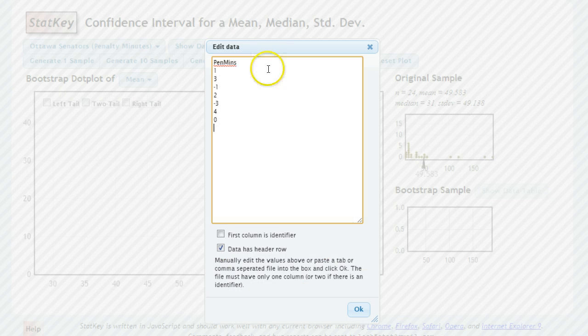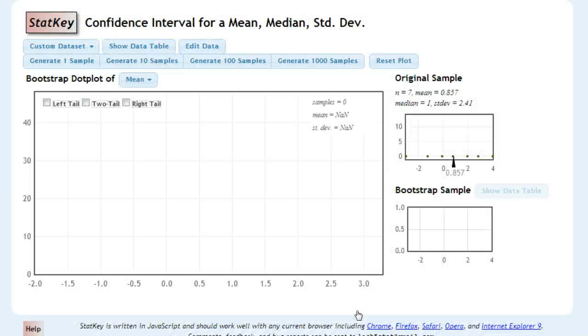And so we get our confidence interval here for a single mean and go to our edit data. And if we can clear out that data, put our new data in. And we're looking for a confidence interval, which means we're going to be doing bootstrap sampling from our original population here. So all these numbers are in the system, and it's going to randomly pick some of them to give us a certain.